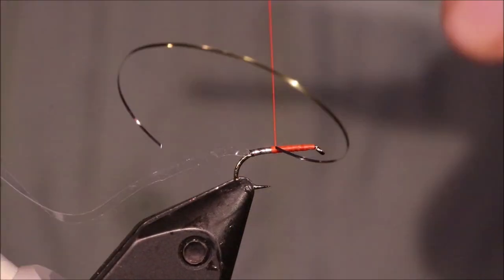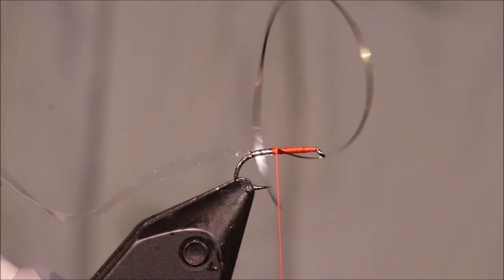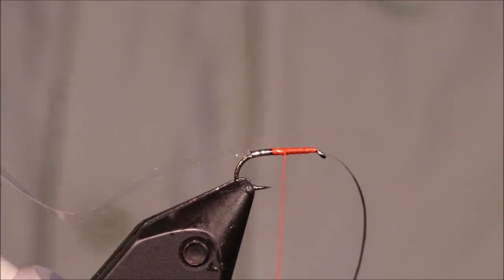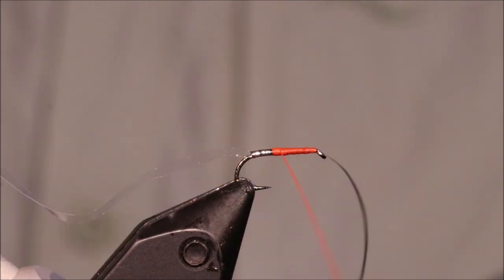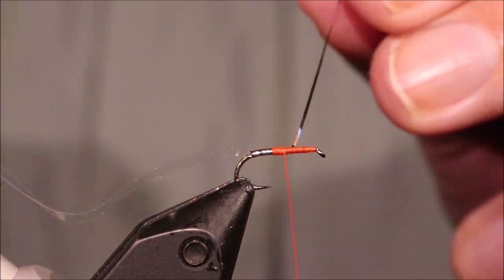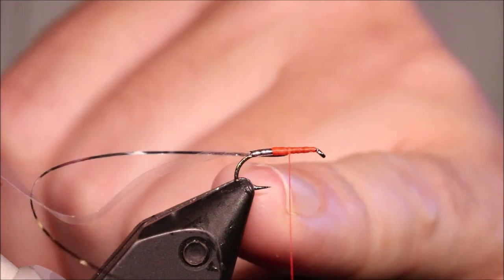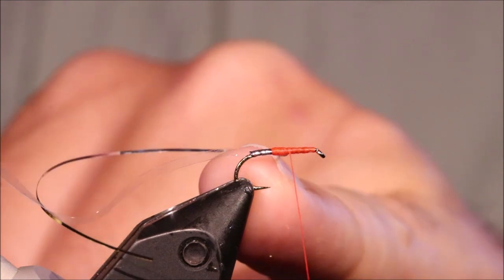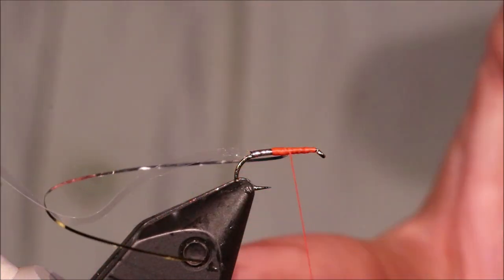And then I'm just going to wind my thread forward, creating a small band, a wee spot bit of orange. Now, this pattern, I believe it's a Malcolm Greenhall pattern and originally it would be like two wraps of floss in the middle, but I don't see the point in that. I think if you're using the fluorescent thread, you might as well just use that to create the wee strap that represents the gut sac, I suppose, of the larvae.